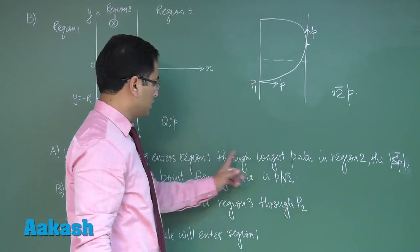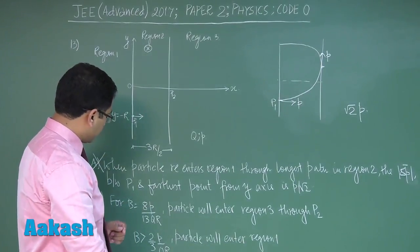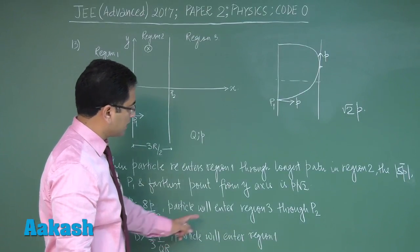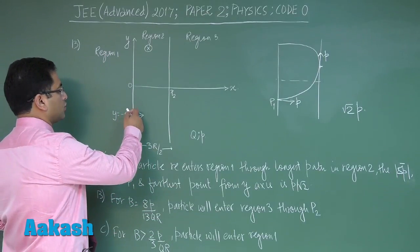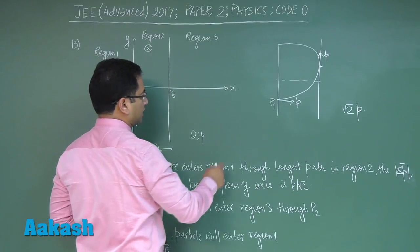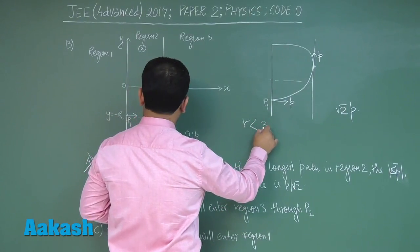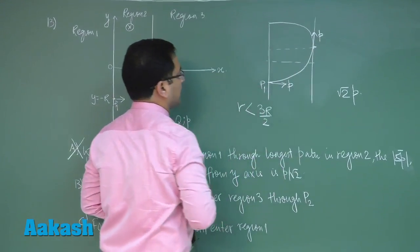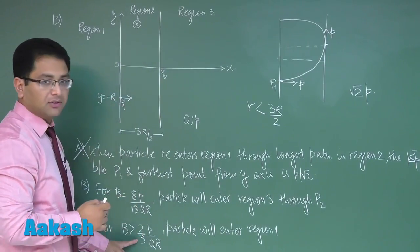So option number a would be incorrect. Now let's see option number c. For B with this particular condition particle will enter region 1. For the particle to enter region number 1, the condition would be straightforward: the radius has to be less than 3r by 2. This is the radius, and if the radius is less than 3r by 2, the particle will enter region number 1.